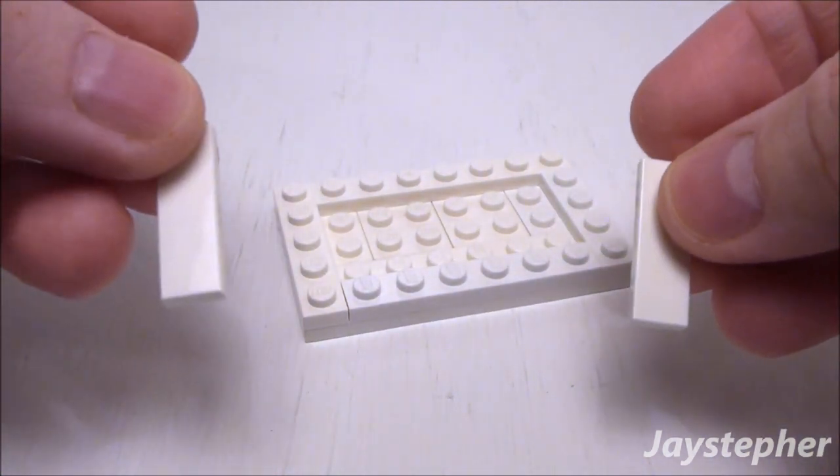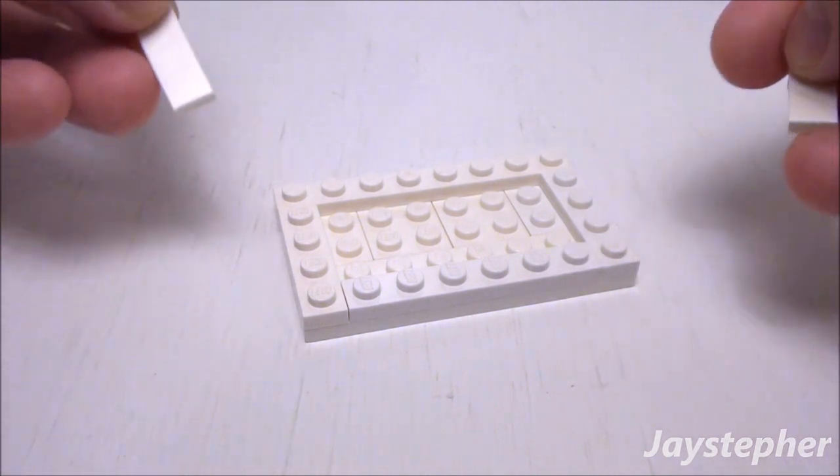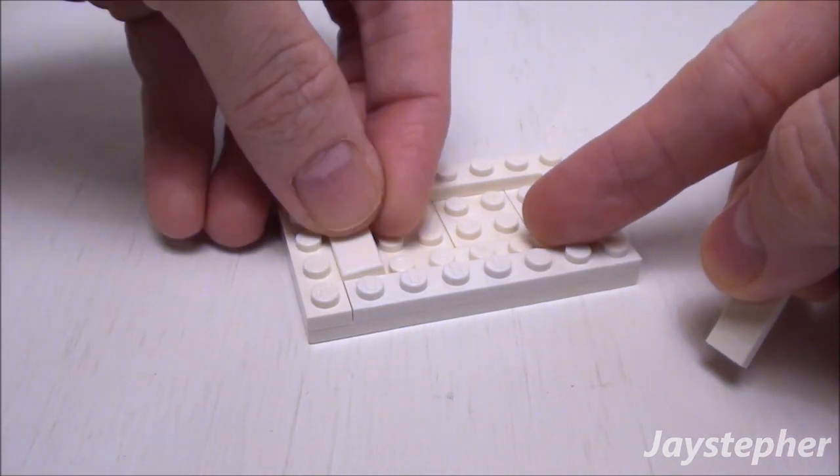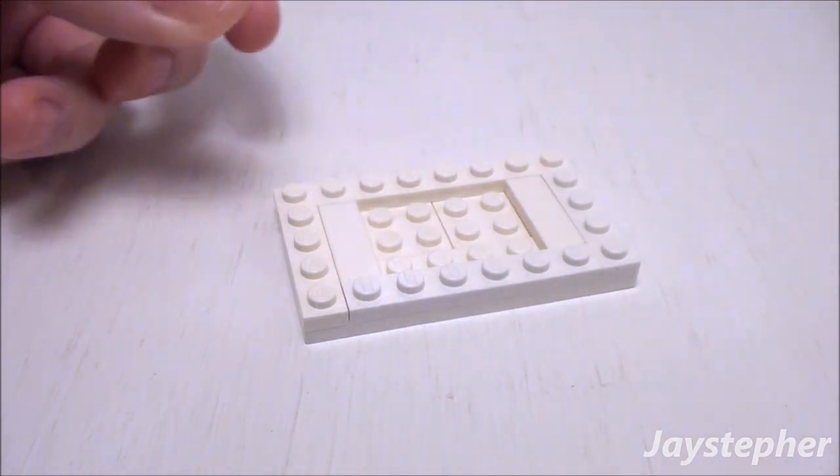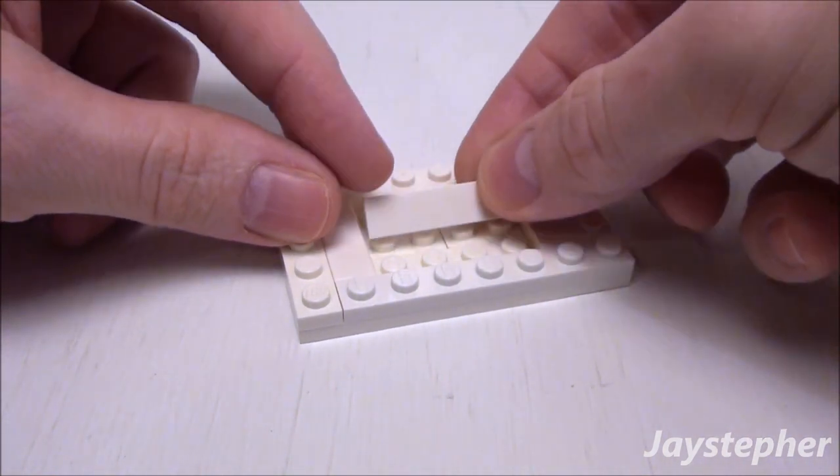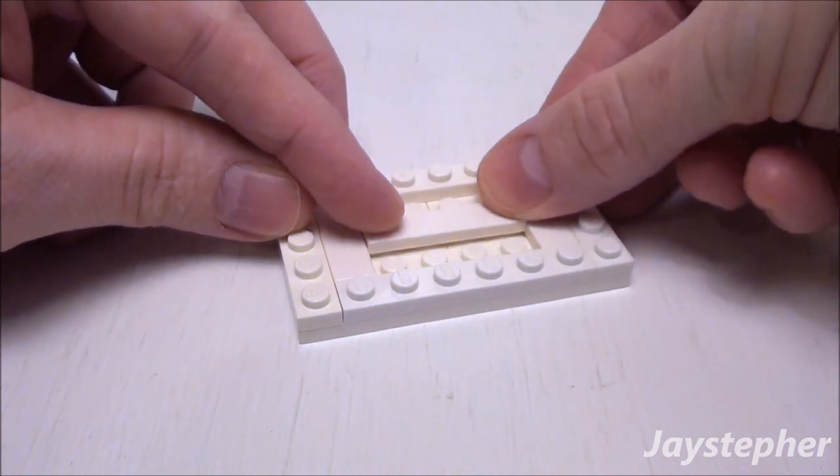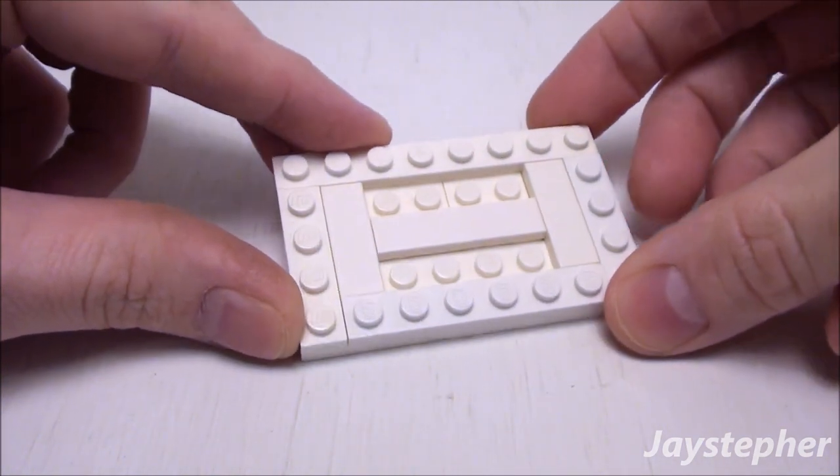Next, take two 1 by 3 flat tiles and place one on the left and one on the right. Now use a 1 by 4 flat tile and place it right in the center like so.